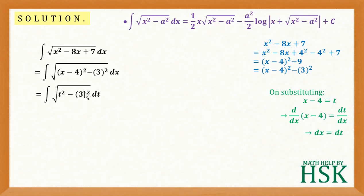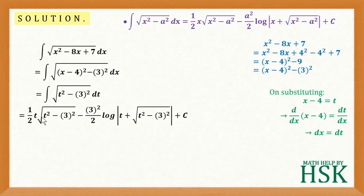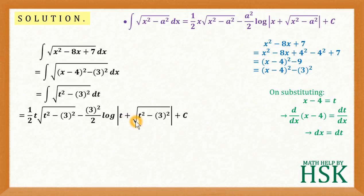Applying the formula for ∫√(t² − a²) dt, I get: (1/2) · t · √(t² − 3²) − (3²/2) · log(t + √(t² − 3²)) + C, which equals (1/2) · t · √(t² − 9) − (9/2) · log(t + √(t² − 9)) + C.